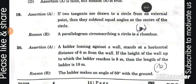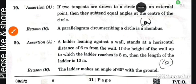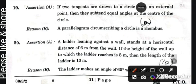This is my assertion: If two tangents are drawn to a circle from an external point, then they subtend equal angles at the center of the circle. This statement is true. Next is reason: A parallelogram circumscribing a circle is a rhombus. This is correct answer option A: Both A and R are true and R is the correct explanation of A.